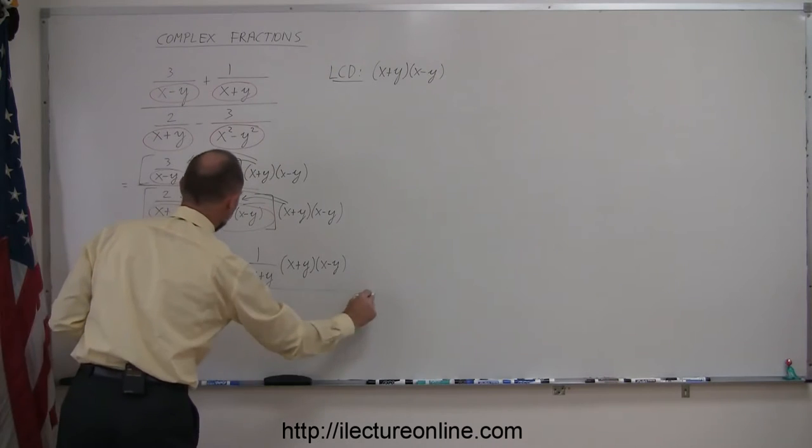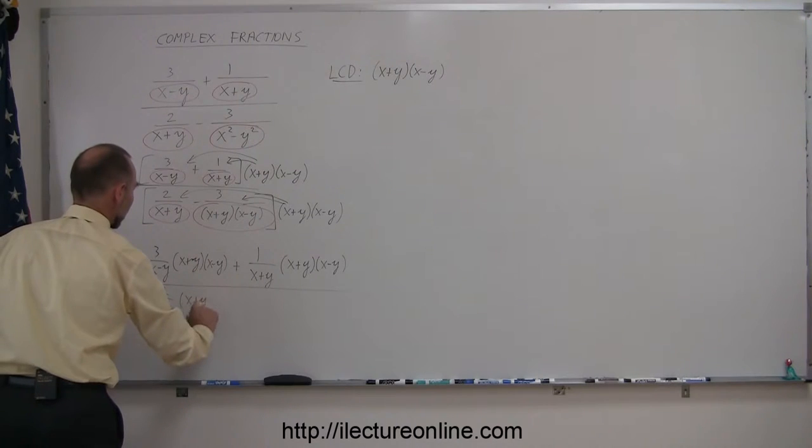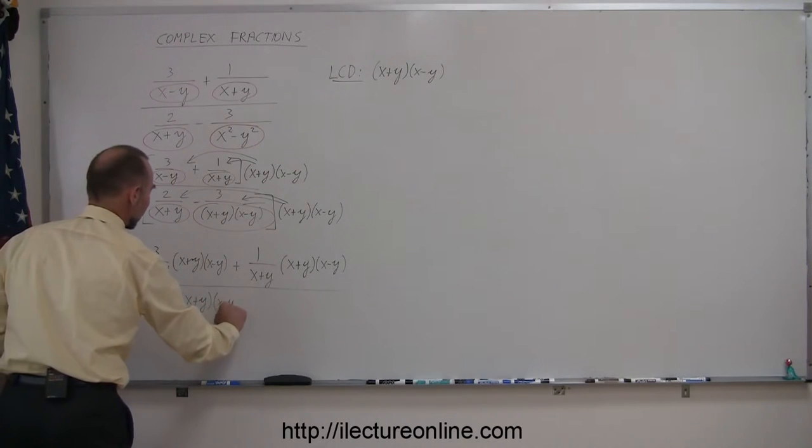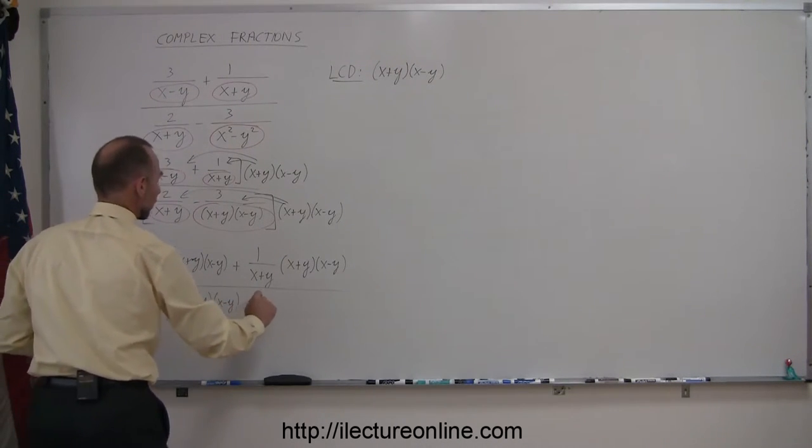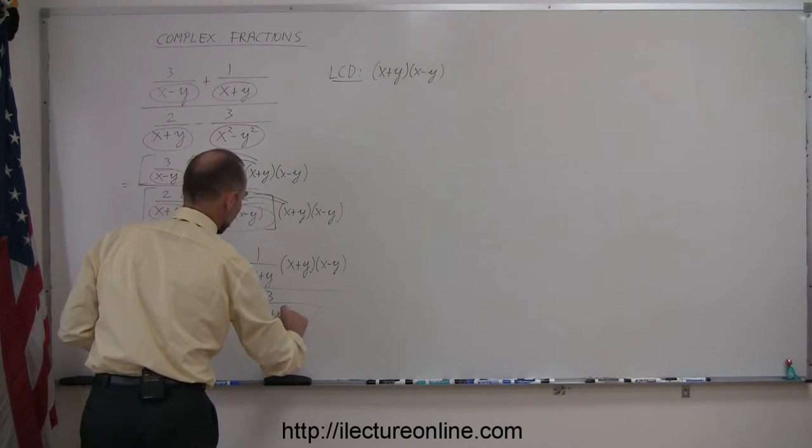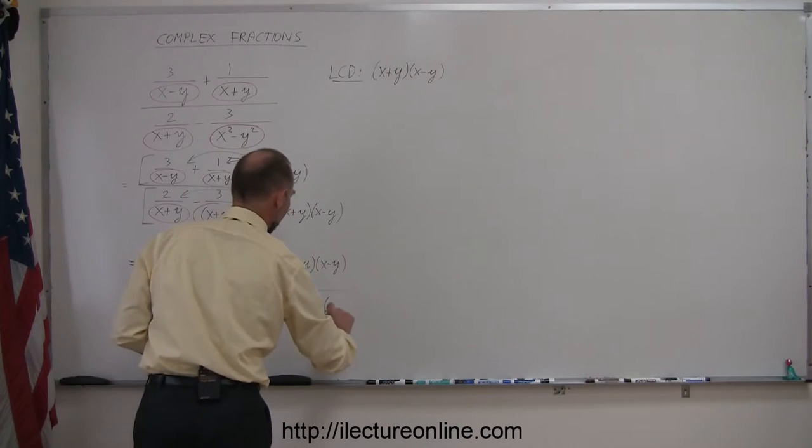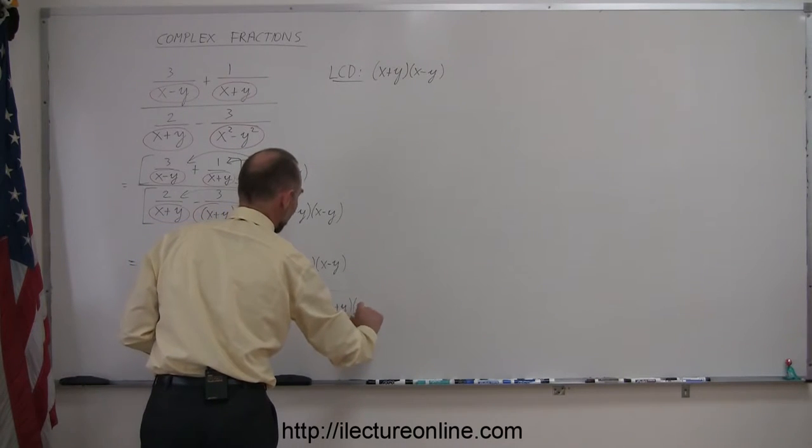The whole thing divided by 2 over x plus y times x minus y, minus 3 over x plus y times x minus y, and the whole thing then, multiply times x plus y times x minus y.